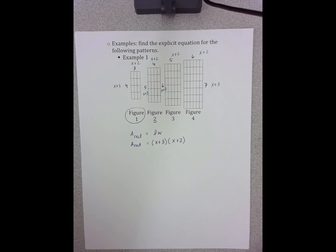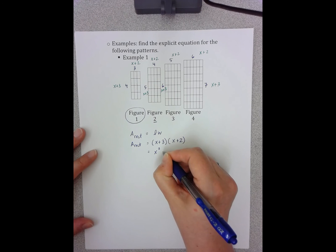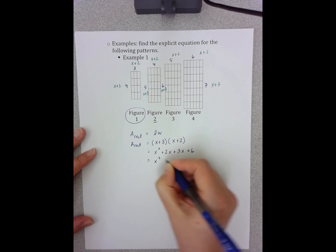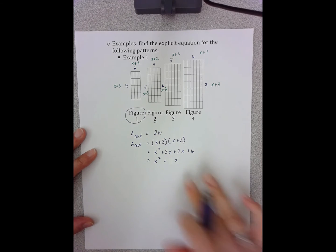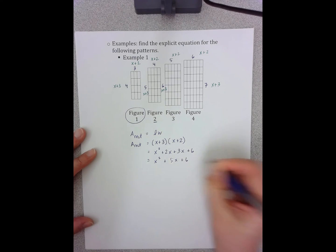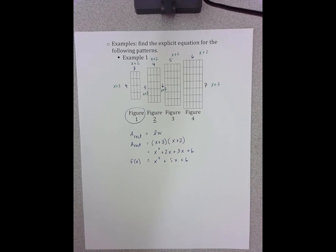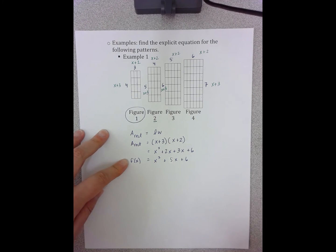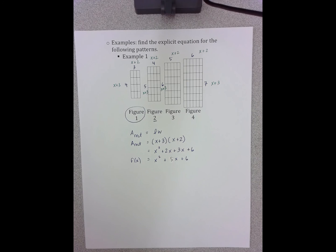In a second video we'll talk about multiplying this out. Using the property of distribution, you get x squared plus 5x plus 6, so f of x equals x squared plus 5x plus 6. You'll need to watch the other video if distribution is not something you're familiar with. We're dealing with the area of a rectangle in relation to a figure number and a number of tiles — so an x and an f of x.